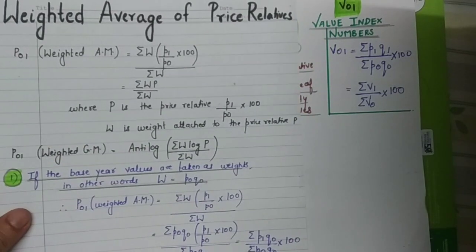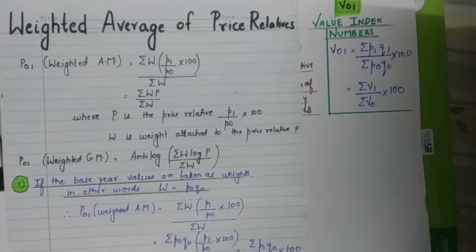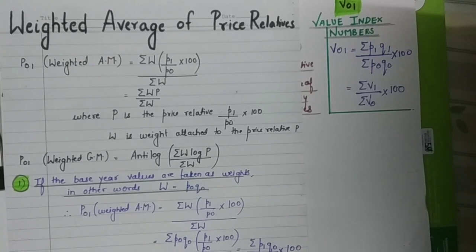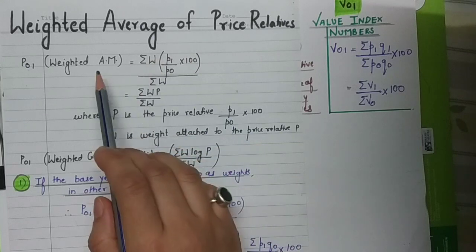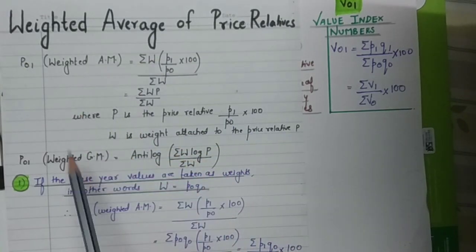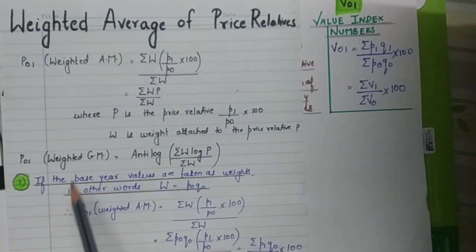What is the weighted average of price relatives method? In this case, weights are assigned based on the relative importance of a commodity within the group of given commodities. A commodity that is more important receives more weight, and a commodity that is less important receives less weight. In the weighted average of price relatives method, we can work with two approaches: arithmetic mean or geometric mean.